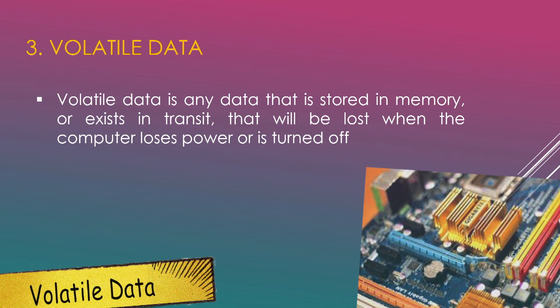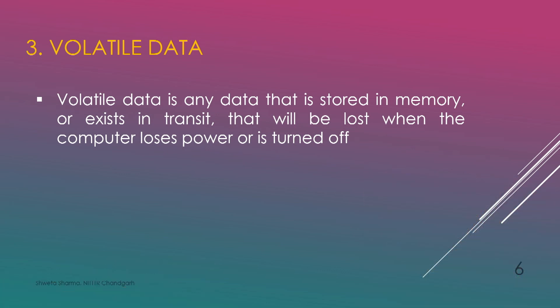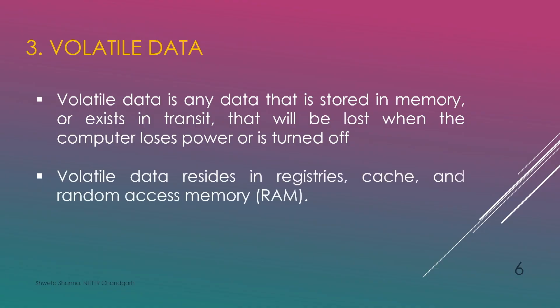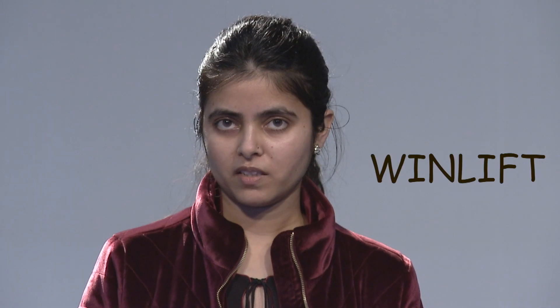What is volatile data? Volatile data is any data stored in memory or existing in transit that will be lost if the computer loses power or is turned off. This data resides in registries, cache, or random access memory. The investigation of volatile data is called live forensics, which is why the tool is named WinLift — Windows Live Forensics Tool — extracting data from a live machine.